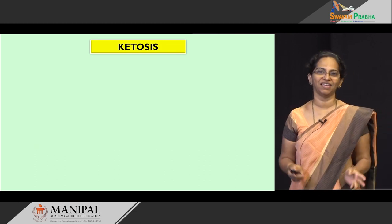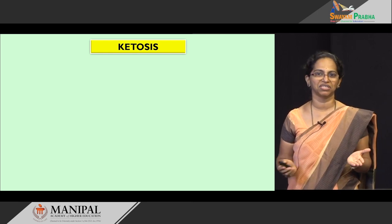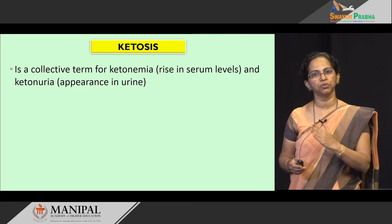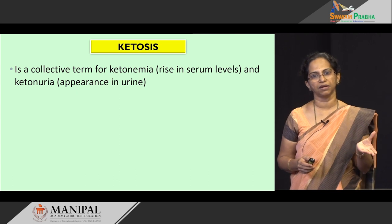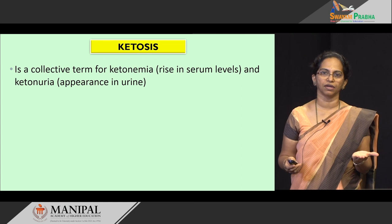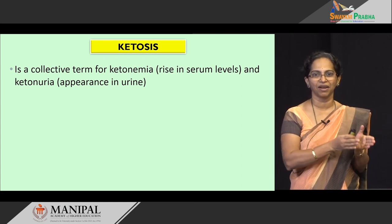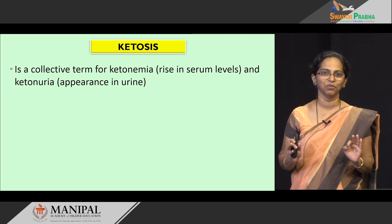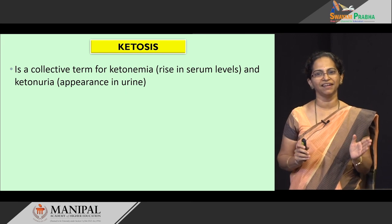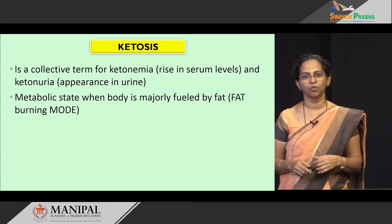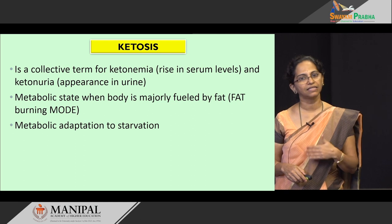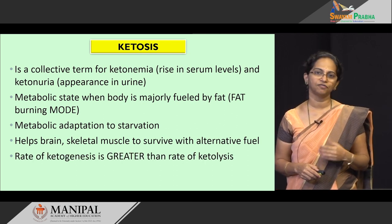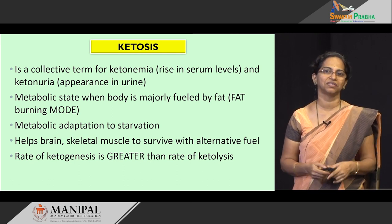Ketosis is a collective term for ketonemia and ketonuria. When ketone bodies are high in the blood it is called ketonemia; when ketone bodies appear in the urine it is called ketonuria. A combination of increased ketone bodies in the blood and in the urine is collectively called ketosis — simply meaning lots of ketone bodies in the blood escaping into the urine. It is a metabolic state when the body is majorly fueled by fat, a metabolic adaptation to starvation that helps the brain and skeletal muscle survive. The rate of ketogenesis is greater than ketolysis.